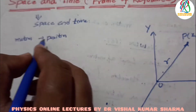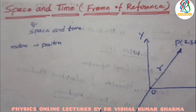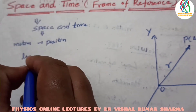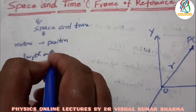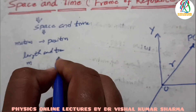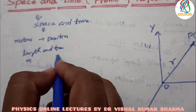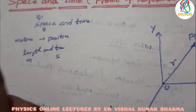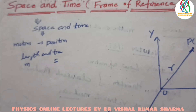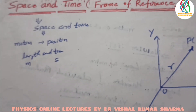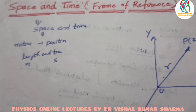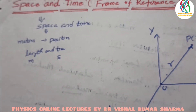There are universal standards when we discuss space — that is, length and time. Length is measured in meters and time is measured in seconds. Any physical phenomenon takes place in a space, and the position at which it occurs is known as a point position.